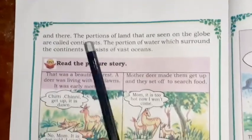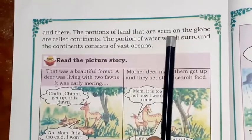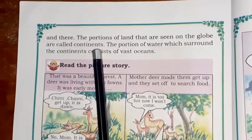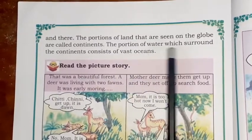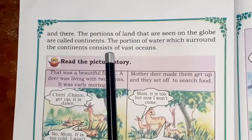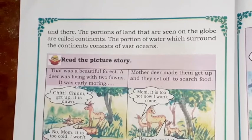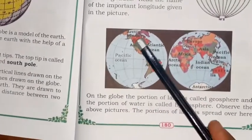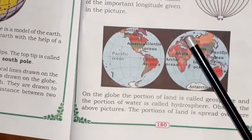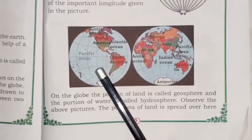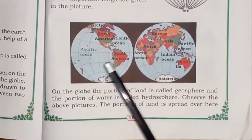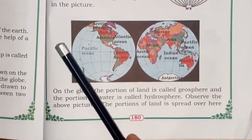The portions of land seen on the globe are called continents. The portions of water which surround the continents consist of vast oceans. This is the ocean and this is the land.